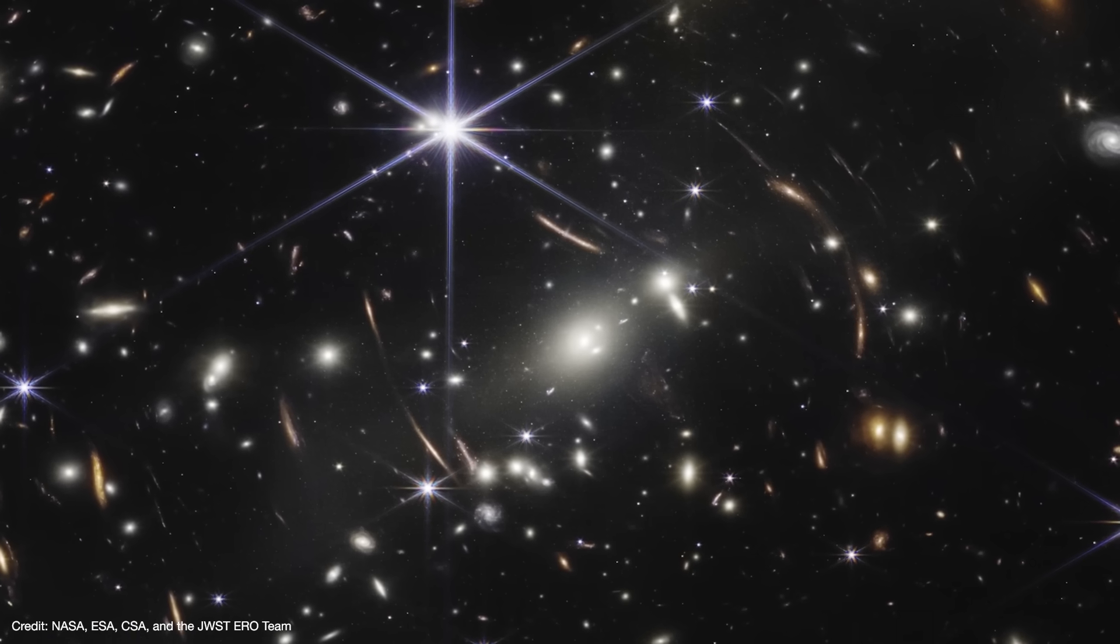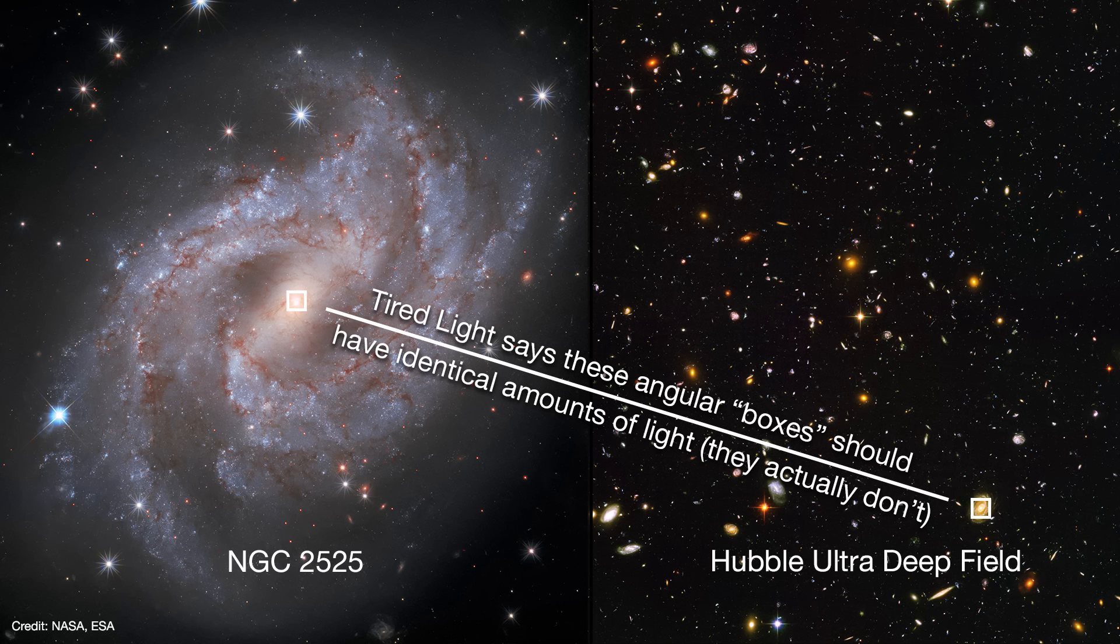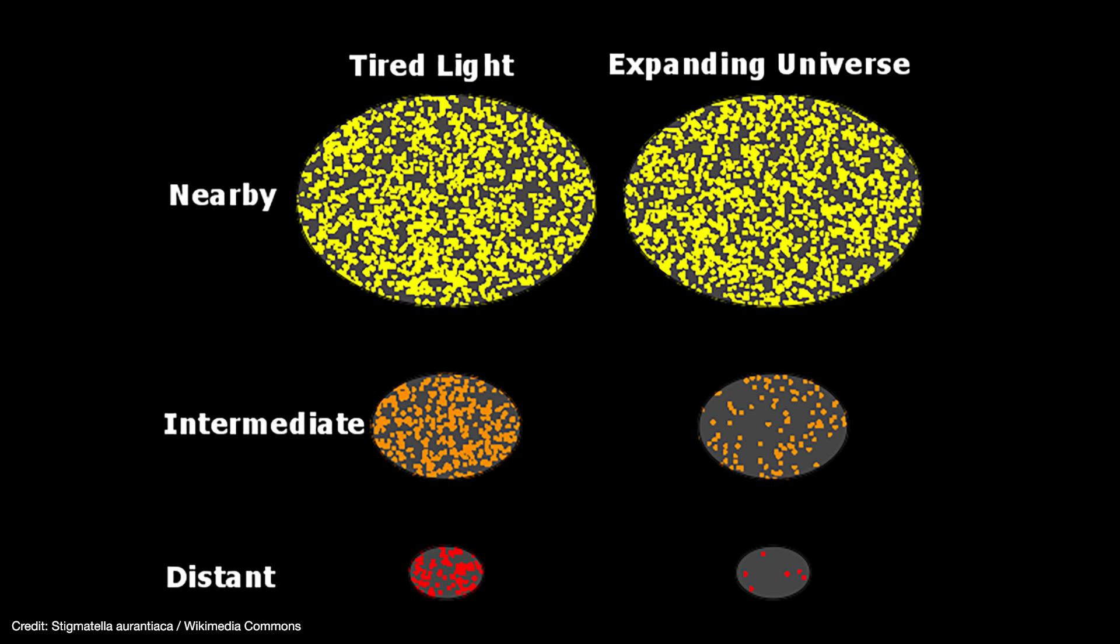Tired light also predicts that if the universe is static, then the amount of light coming off a galaxy's surface should be the same no matter its distance. The idea is that if the galaxy is further away, the less light we're going to receive from it due to its distance, but its angular size is smaller as well, so the amount of light coming off a unit angular surface area should be the same. That's not what we detect either. When we look at the most distant galaxies, the amount of light per unit surface area is much less than for nearby galaxies.